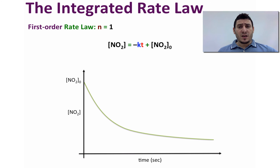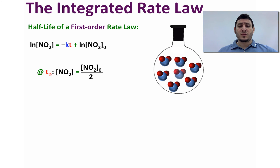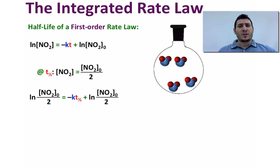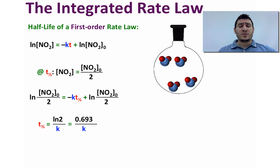Now let's discuss the half-life for the first-order rate law. At the half-life, [NO₂] = [NO₂]₀ / 2. Substituting and rearranging, we get that the half-life equals ln(2) / k, where ln(2) = 0.693. Since k is constant, the half-life is constant.